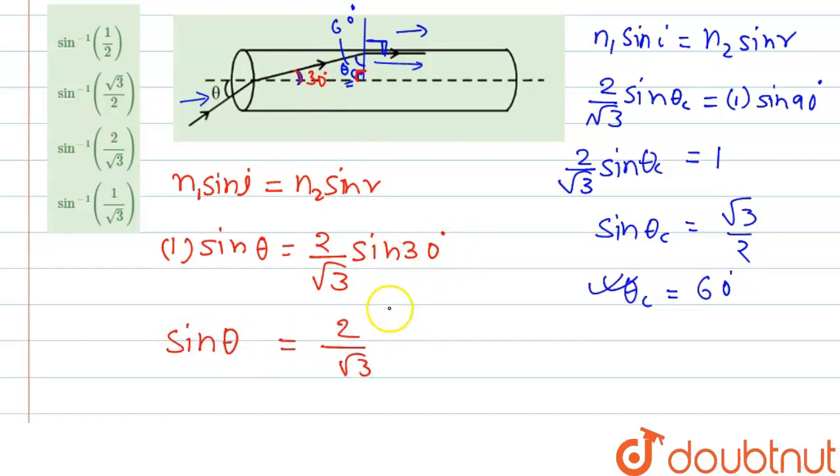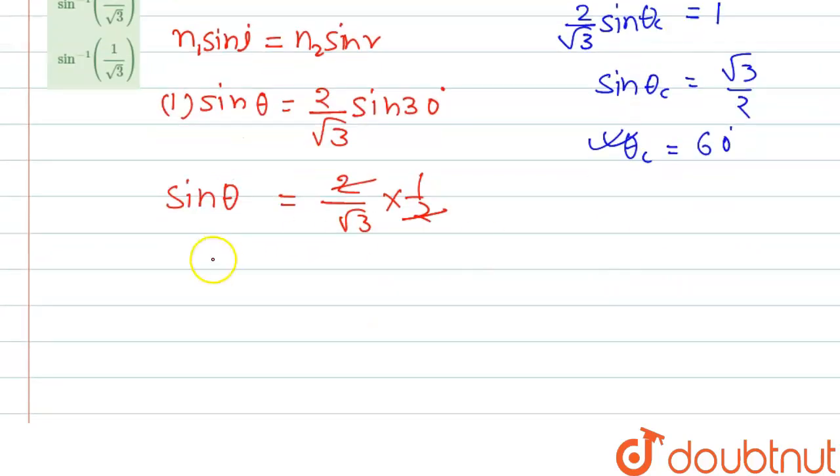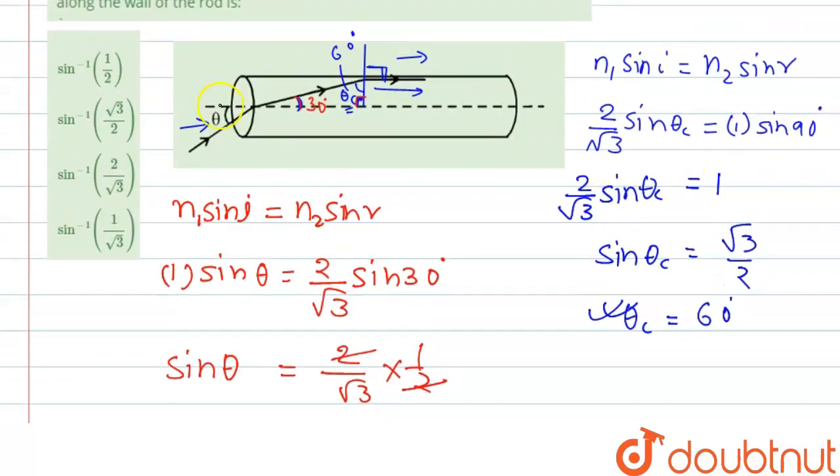Here we can write sin theta equal to 2 by root 3 and sin 30 is 1 by 2. So here 2 and 2 both are cancelled out, so we can write 1 by root 3. And here sin theta, so what we will write here for theta, we can write sin inverse 1 by root 3.